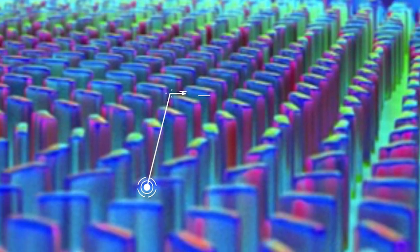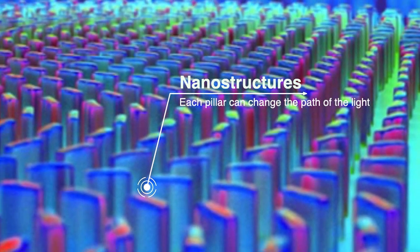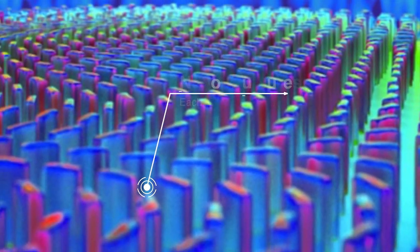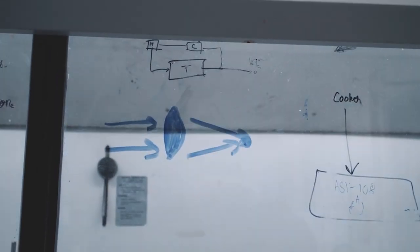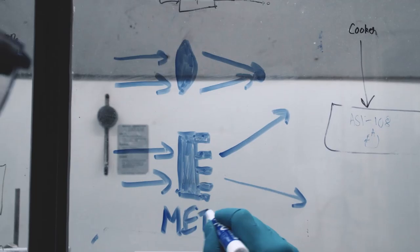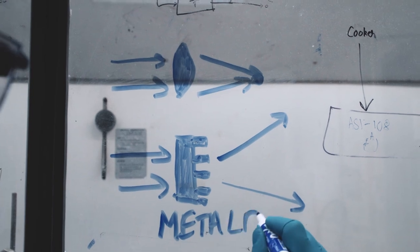Metalenses are thin, flat, optical components that use nanostructures to focus the light. They're essentially the same type of lens as a traditional one and can perform all the basic abilities plus more and are orders of magnitude smaller.